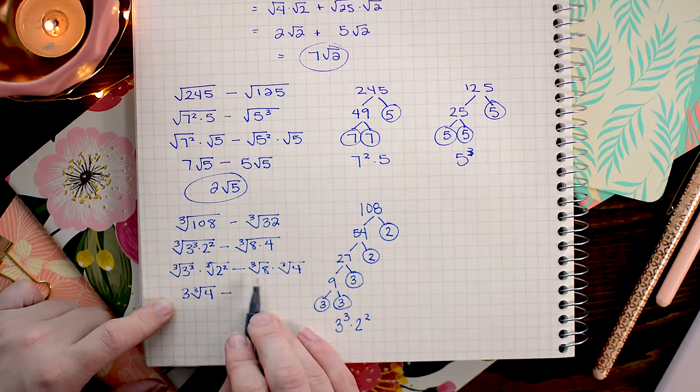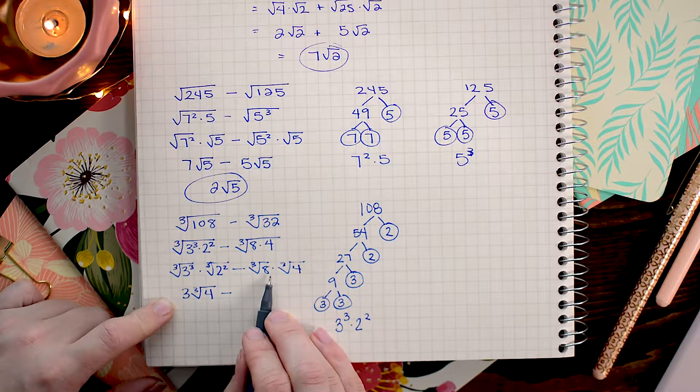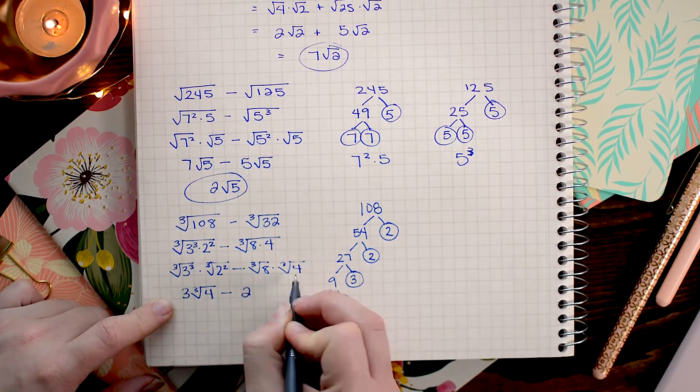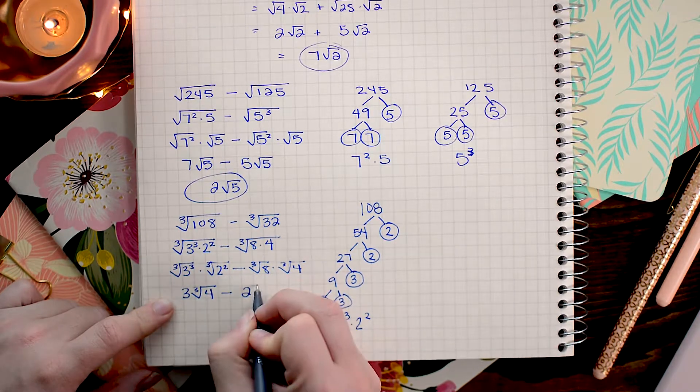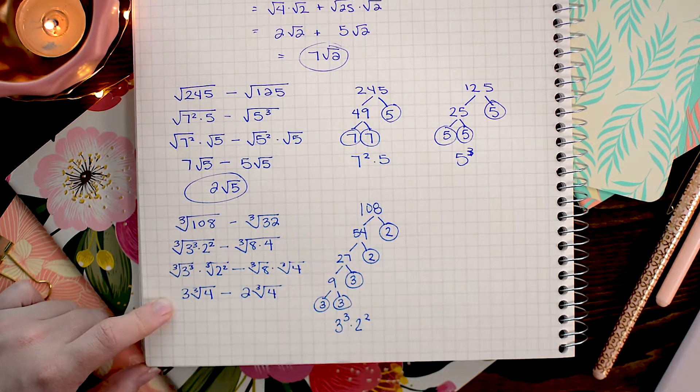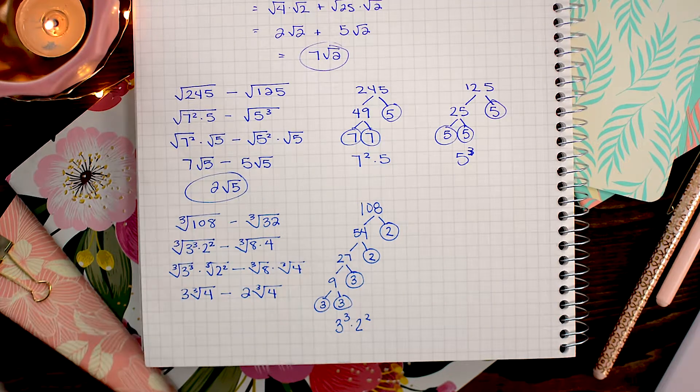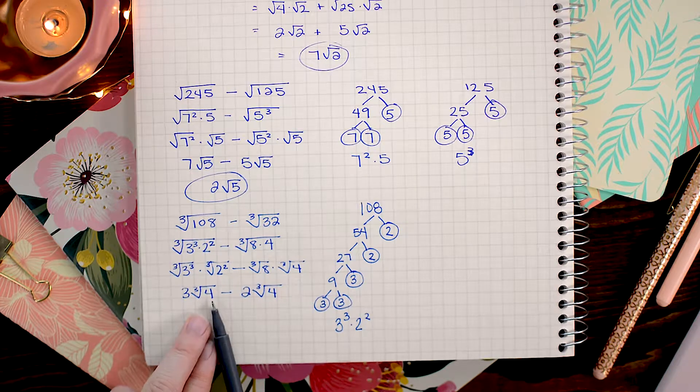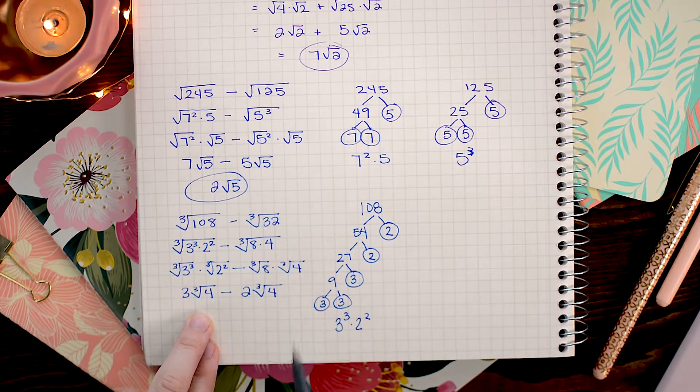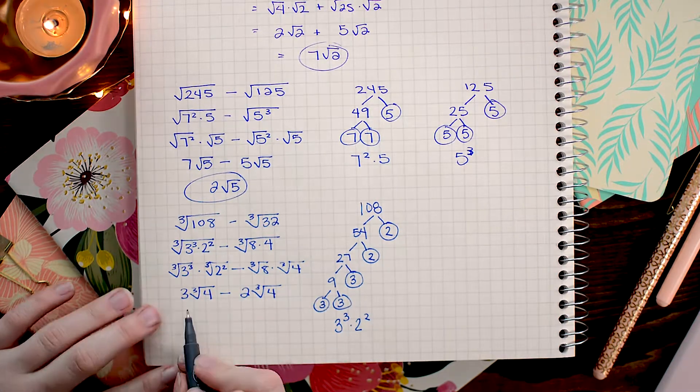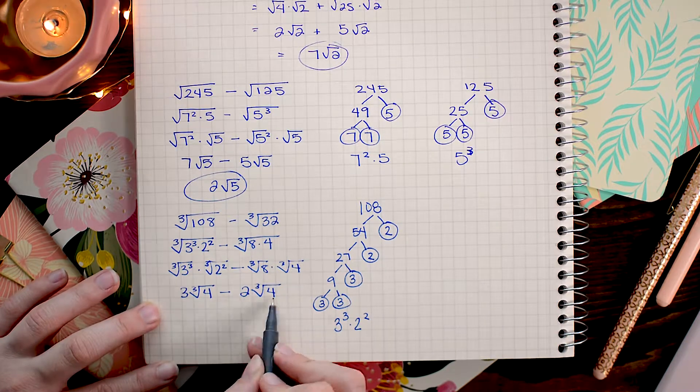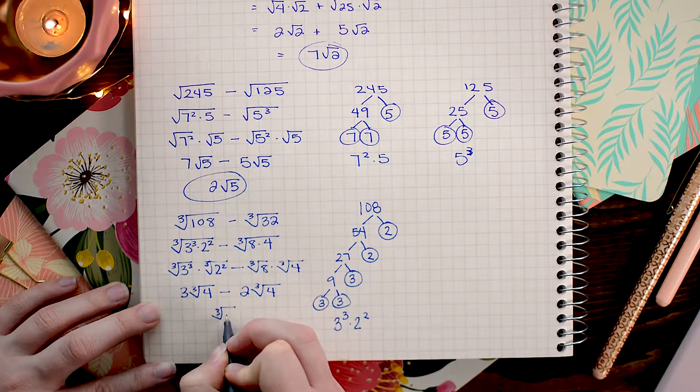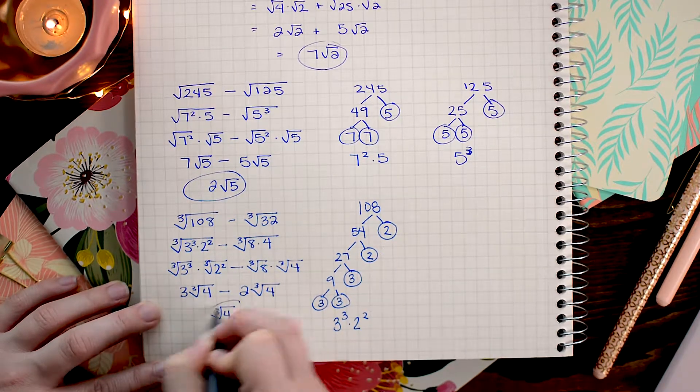And then over here, I know that 2 times 2 times 2 is 8. So the cube root of 8 is going to be 2. And I can't simplify the cube root of 4 any further. Alright, so now we have the conditions that we need. We have cube roots on both of these and both with bases of 4. So 3 cube root of 4 minus 2 cube root of 4 makes 1 cube root of 4. I don't need to write the 1 down. I can just write cube root of 4 as our answer.